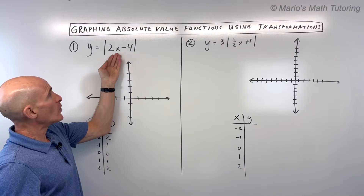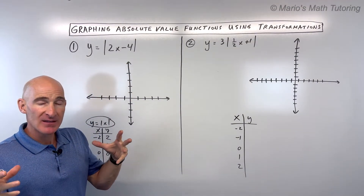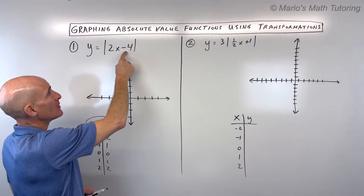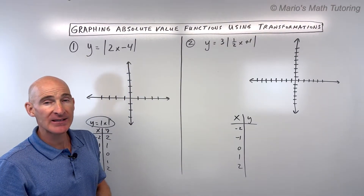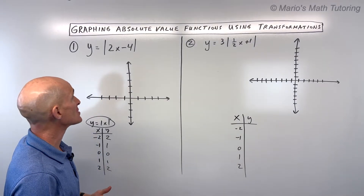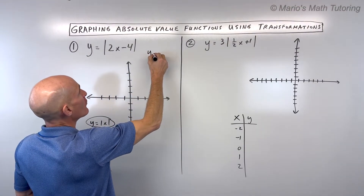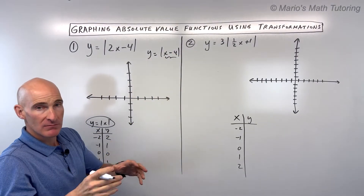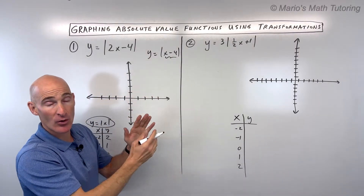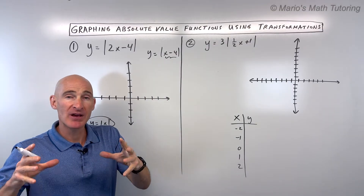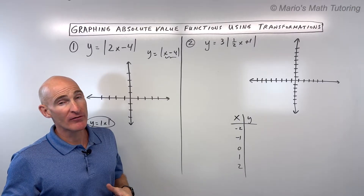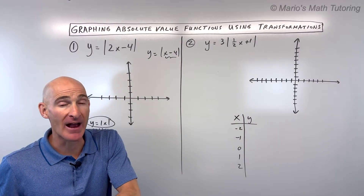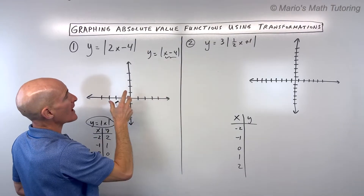When you look at what's inside of the absolute value bars, this may seem counterintuitive at first, but you actually want to think of the reverse of PEMDAS. You're going to be doing the adding and subtracting before the multiplying or dividing. It has to do with the composition of functions. Whatever is grouped with the x is going to affect the x values — the horizontal direction. Adding and subtracting shifts the graph, and multiplying or dividing stretches or shrinks it, but it has the opposite effect when it's grouped with the x.